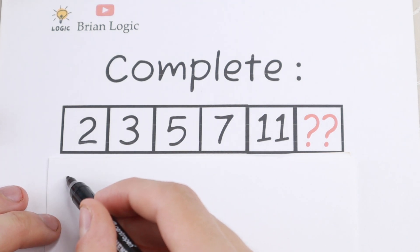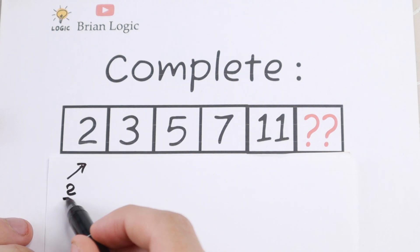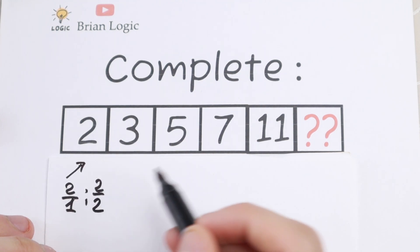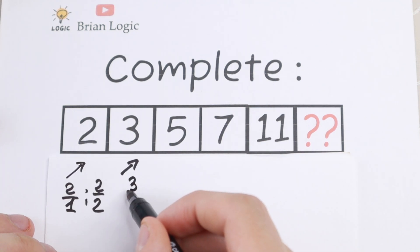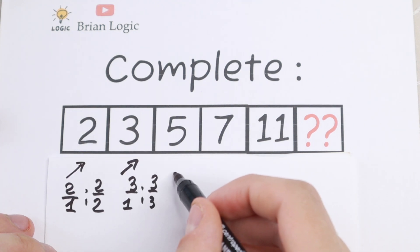So take a look. Right here we have 2. So the factors of 2 are only 1 and 2. We can divide this 2 by 1 and by 2 only. This 3 can be divided only by 1 and by itself, 3 by 3. This 5 as well: 5 over 1 and 5 over 5.